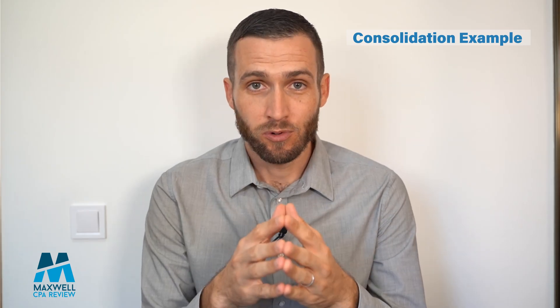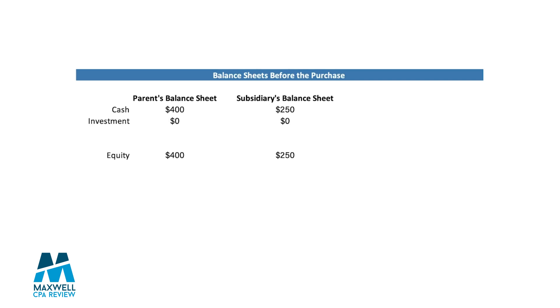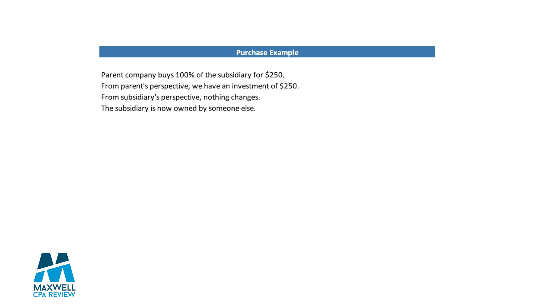Let's take a look at an example where a parent company buys 100% of a subsidiary and see the resulting journal entry. First, let's consider their balance sheets before the purchase occurs. The parent company has $400 of cash and $400 of equity, and the subsidiary has $250 of cash and $250 of equity. The parent company then buys 100% of the subsidiary for $250. From the parent's perspective, that's a credit to cash of $250 and a debit to investment of $250. That $250 cash payment goes to the owners of the subsidiary — the existing shareholders — not to the subsidiary itself.